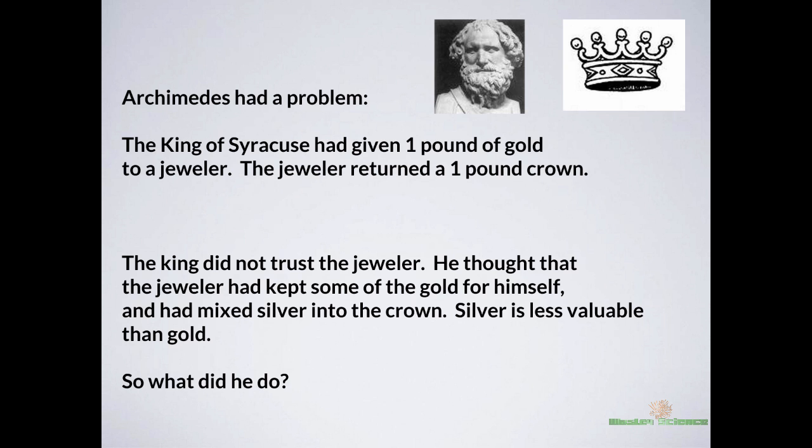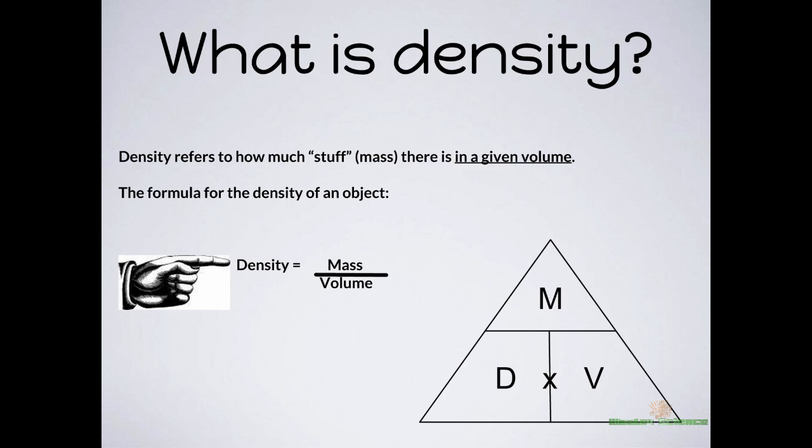So, the king went to Archimedes to see if he could solve this problem — to see if there was silver mixed in with the crown. You may have heard this story before, but what do you think he did to figure it out? Your hint is that he did use density to his advantage. So maybe now you're wondering: what's density?